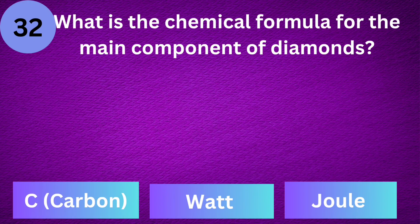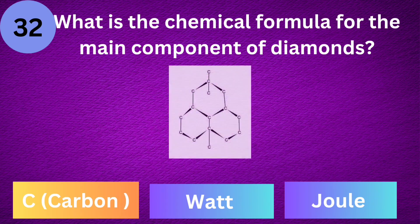What is the chemical formula for the main component of diamonds? C — Carbon.